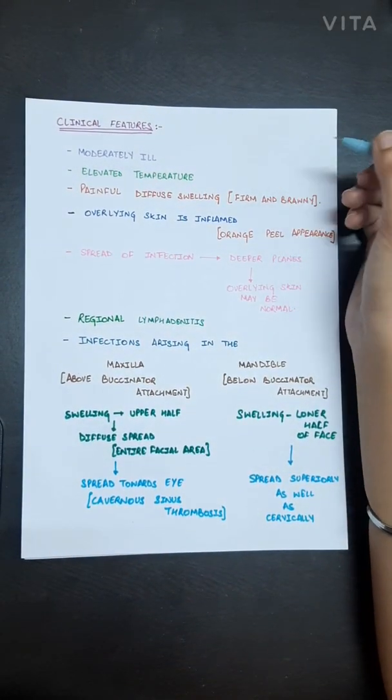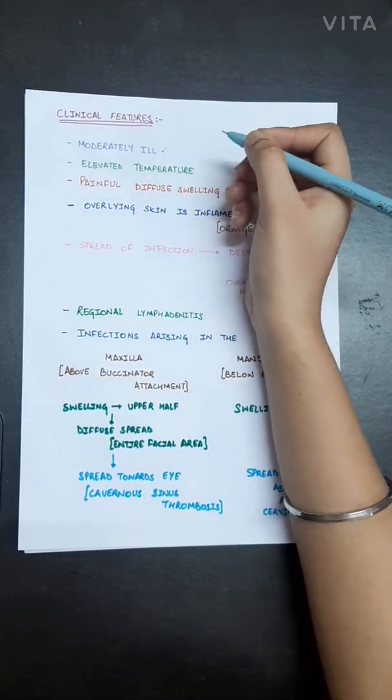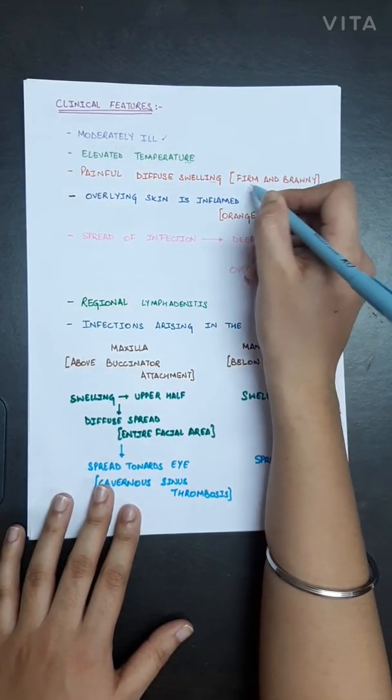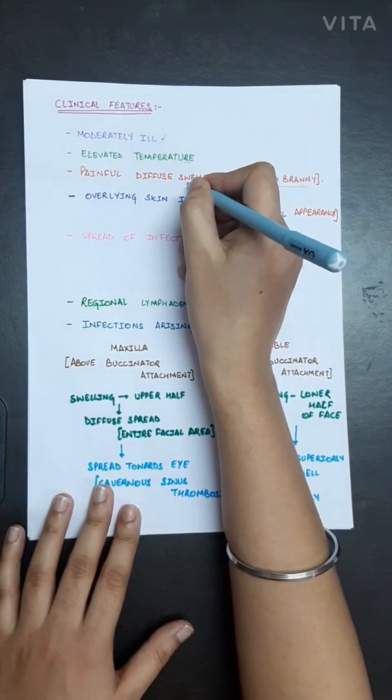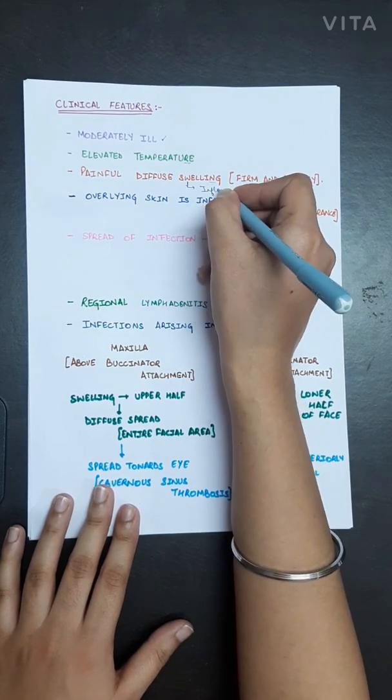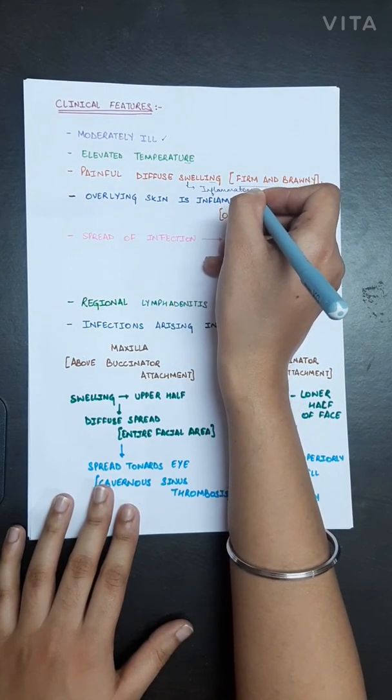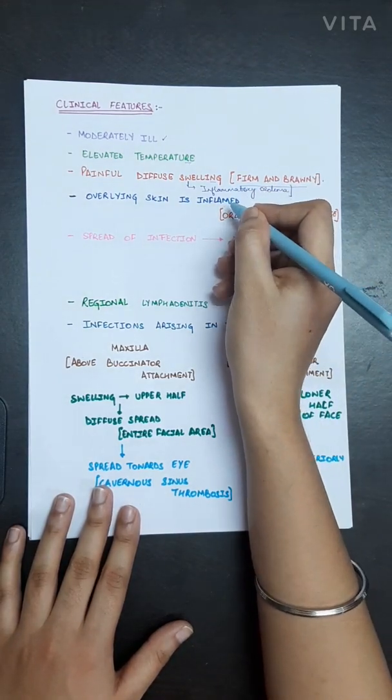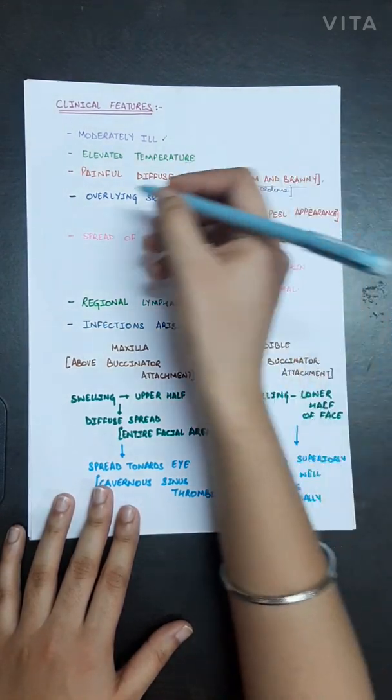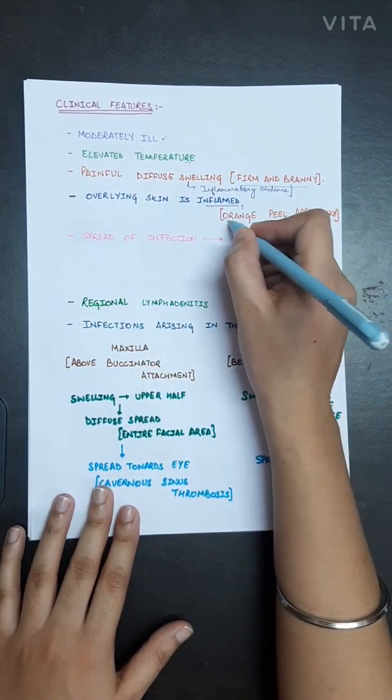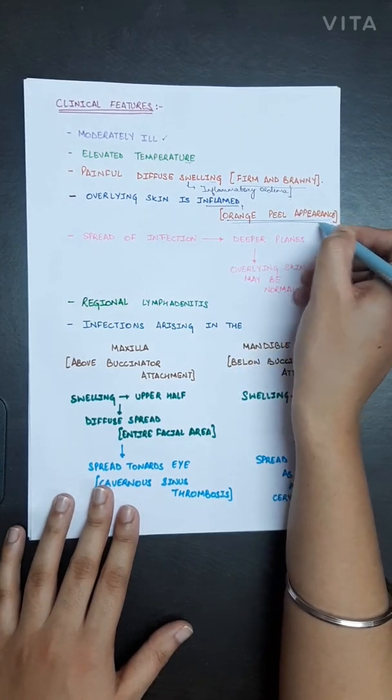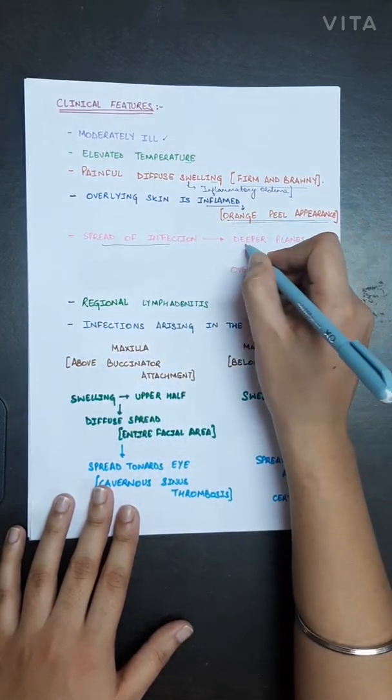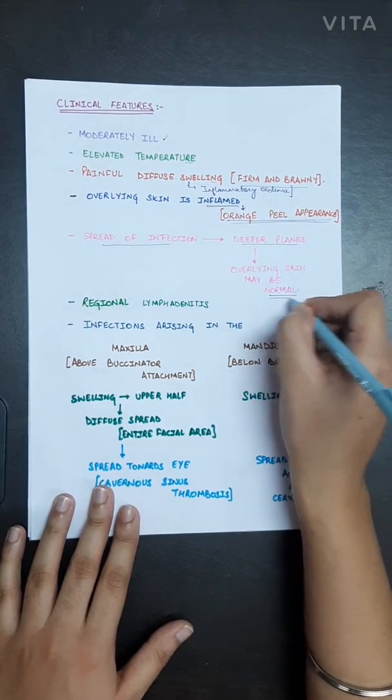The clinical features of cellulitis: the patient will be moderately ill with elevated temperature and painful diffuse swelling which would be firm and brawny. This swelling is mostly due to inflammatory edema. If the infection is superficial, the overlying skin is inflamed and will appear as orange peel. If the spread of infection is in deeper planes, the overlying skin may appear normal.